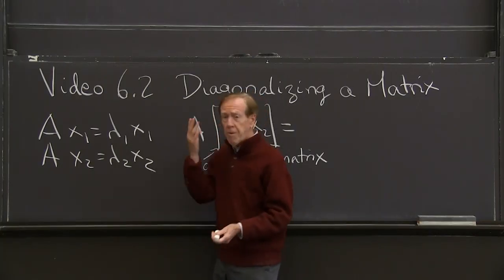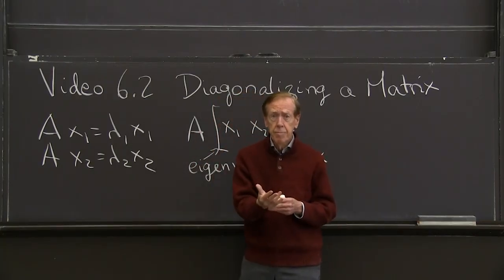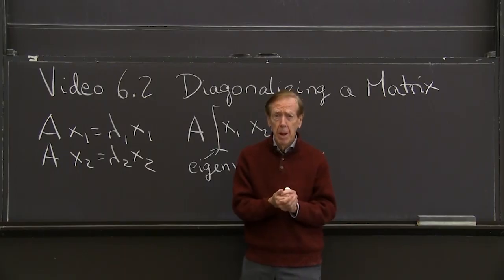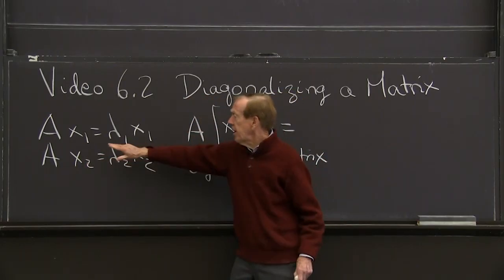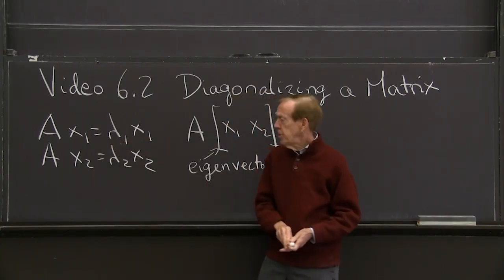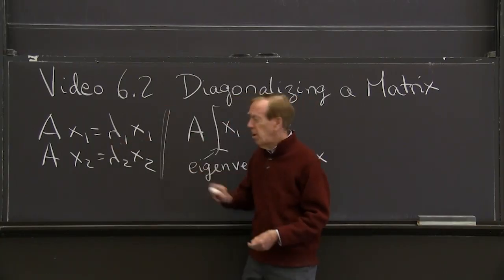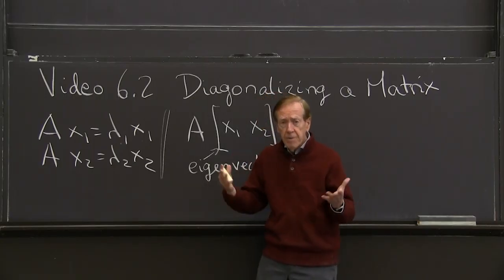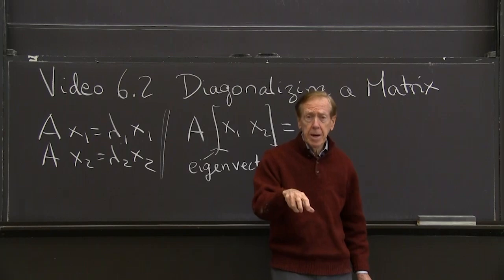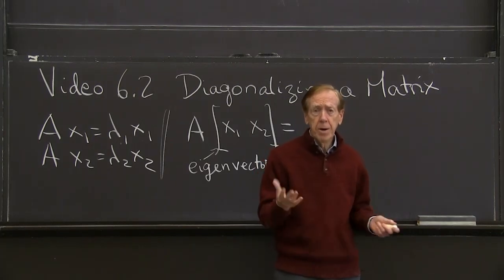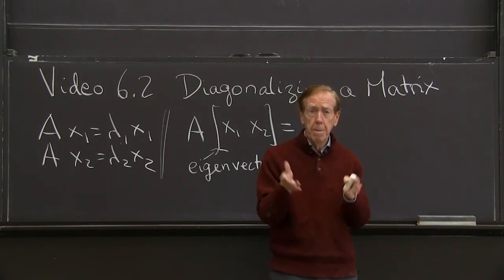So you remember I have a matrix A, 2 by 2, for example. It's got two eigenvectors. Each eigenvector has its eigenvalue. So I could write the eigenvalue world that way. I want to write it in matrix form. I want to create an eigenvector matrix.